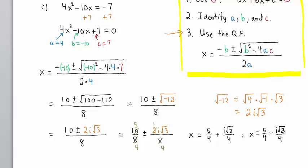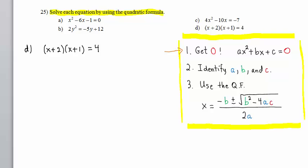Now let's go on to Part D. To solve this equation by the quadratic formula, again we must start by getting 0. Expanding by FOIL on the left-hand side of the equation, we have x² + 1x + 2x + 2 = 4, or x² + 3x + 2 = 4.